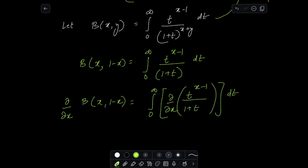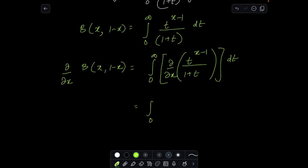So the partial derivative is going to go inside, so it's ∂/∂x of t to the power x minus 1 over 1 plus t, and the whole thing is going to be integrated with respect to t.